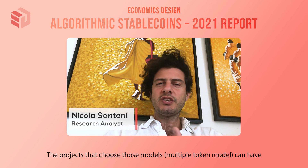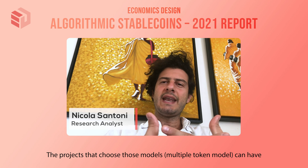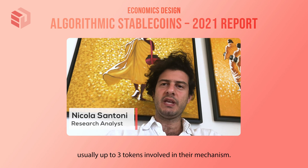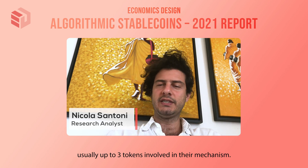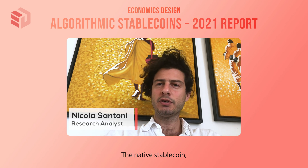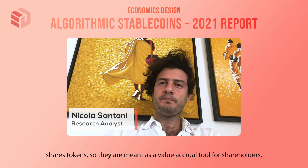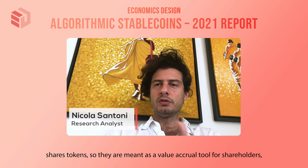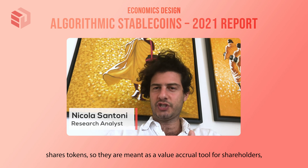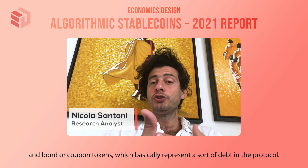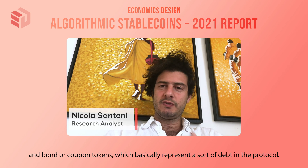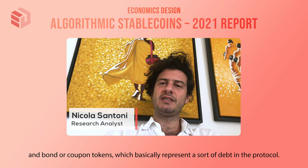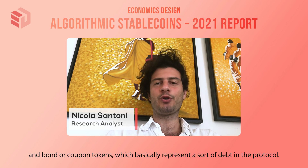Projects that choose the multiple token model can have usually up to three tokens involved in their mechanism: the native stablecoin, share tokens minted as a value accrual tool for shareholders, and bond or coupon tokens, which represent a sort of debt in the protocol.